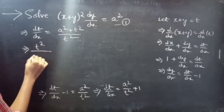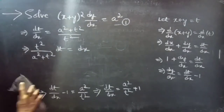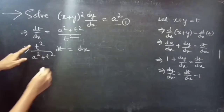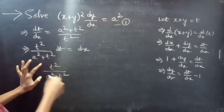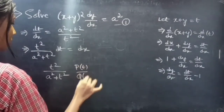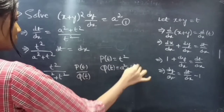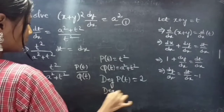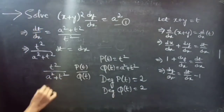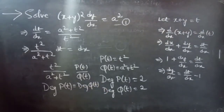We can rewrite the equation as t²/(a² + t²) · dt = dx. Here we have the fraction t²/(a² + t²). This is an improper fraction. Representing it as p(t)/q(t), we have p(t) = t² and q(t) = a² + t². The degree of p(t) is 2 and the degree of q(t) is 2.